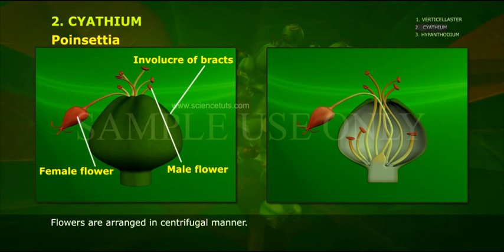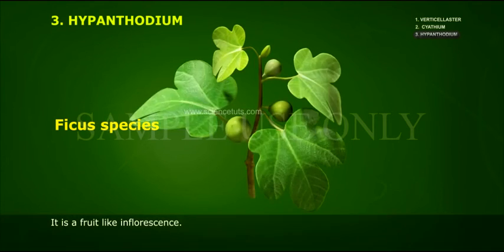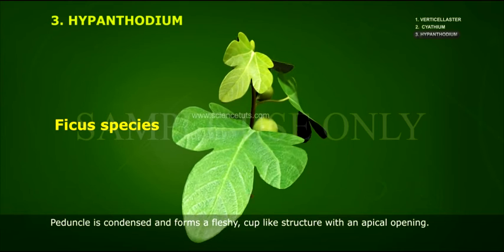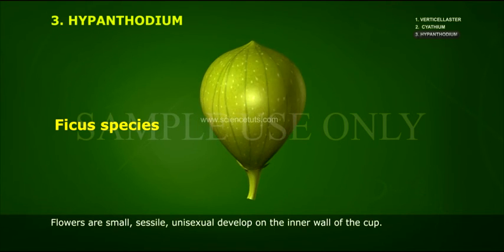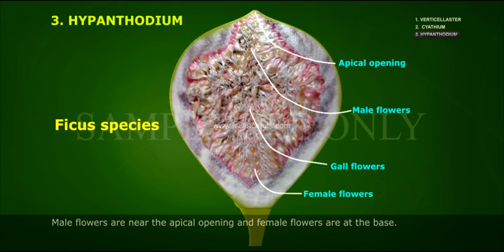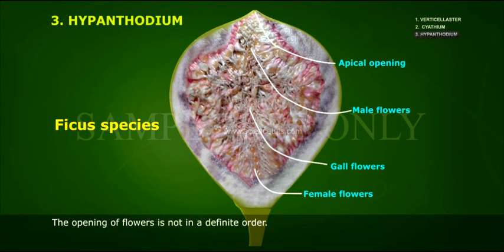Flowers are arranged in a centrifugal manner, as in poinsettia. Hypanthodium is a fruit-like inflorescence. The peduncle is condensed and forms a fleshy, cup-like structure with an apical opening. Flowers are small, sessile, and unisexual, developed on the inner wall of the cup. Male flowers are near the apical opening and female flowers are at the base. In between the two types of flowers, some sterile female flowers, called gall flowers, are present. The opening of flowers is not in a definite order. For example, Ficus species.